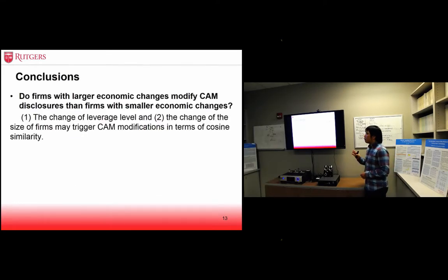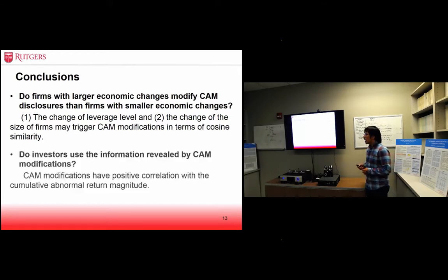To answer my research questions, first, the change of leverage level and the change of the size of companies may trigger CAM modifications in terms of cosine similarity. CAM modifications have positive correlation with the cumulative abnormal return magnitude. It may imply that investors use the information revealed by cosine similarity of CAM disclosures. Thank you.